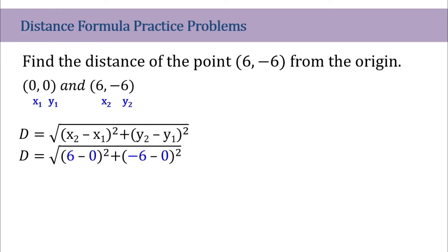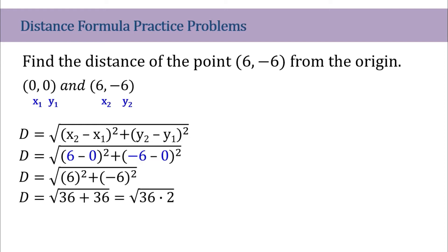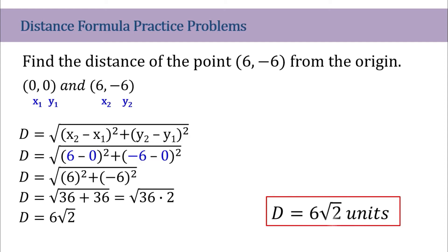Then we will simplify it further, giving us the square root of 6 squared plus negative 6 squared. That is 36 plus 36, equal to the square root of 36 times 2. Now 36 is a perfect square, so we need to bring this out of the square root sign. That gives us the distance of 6 square root of 2 units. So that's the distance between these two points.